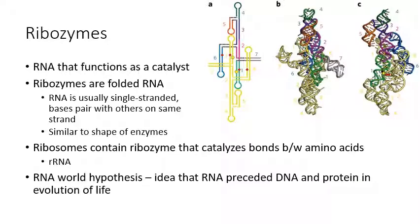Most of the time when you have catalysis happening in the body, an enzyme is performing it. But there are a few exceptions where RNA actually functions as a catalyst — any time RNA works as a catalyst, we call that a ribozyme. An enzyme is a protein that functions as a catalyst; a ribozyme is RNA that functions as a catalyst. A ribozyme is a single strand of RNA folded up to make a complicated 3D shape, similar to how enzymes are a chain of amino acids folded into a 3D shape — and that shape is what lets ribozymes do the catalysis.